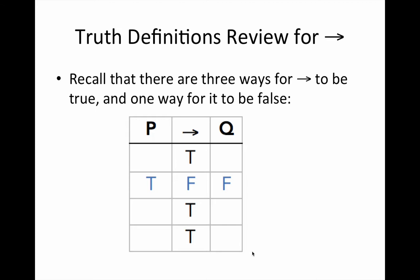How is that a reflection of mapping the concept of validity on to the conditional? Well, recall that there is one way in which an argument is invalid, and that is when the premise or premises is true and the conclusion is false. Hence, here, row two.